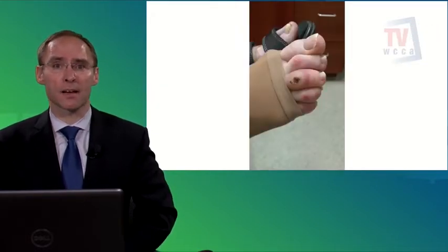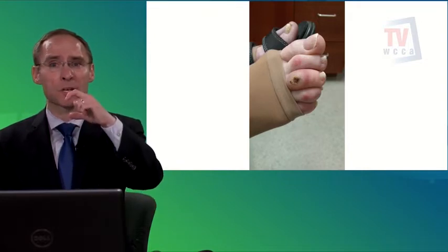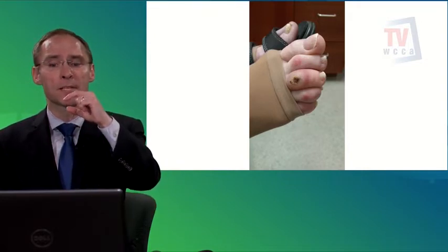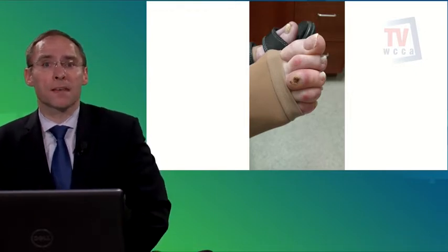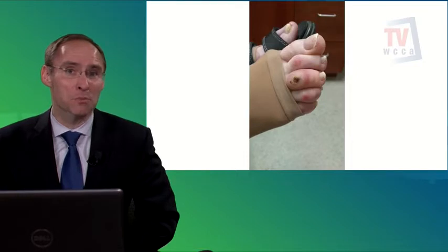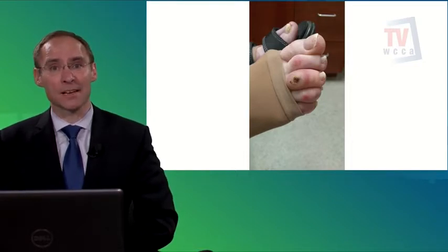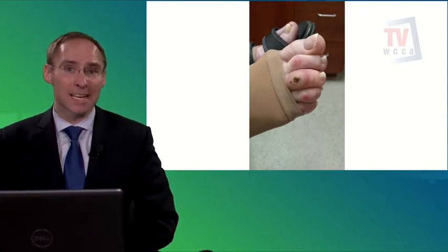A hammer toe can also cause a problem on the top of the toe from rubbing on the top of the shoe. You can see there's some blood on that area, and if you trim down that callus on top, you'll probably find an ulcer underneath. The treatment is to trim those calluses and make sure the patient has a deep enough shoe that won't rub on that area.